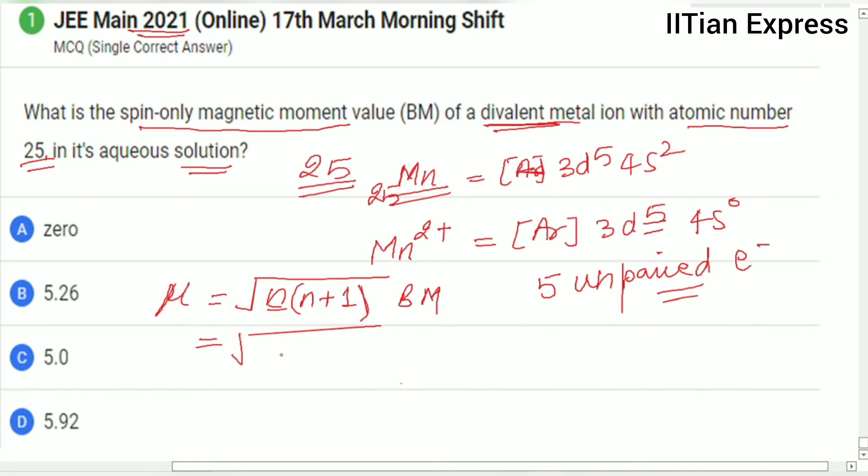After putting the value, we get root over 5 multiplied by 7. Here n is 5, so it becomes root over 35. Further, if we simplify, it becomes 5.92 Bohr magneton.